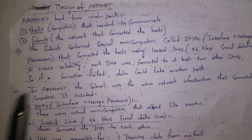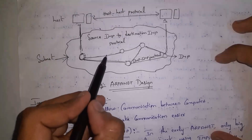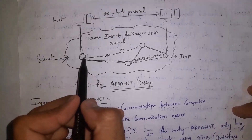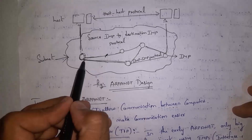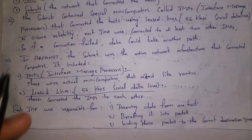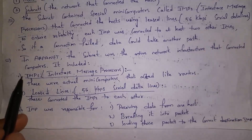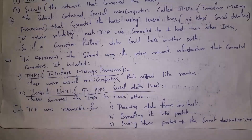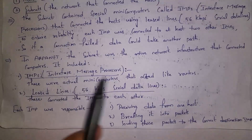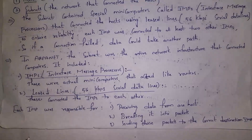Each IMP device is also connected to various other IMP devices, so even if there is any connection failure, data will simply take another path. For example, when I send 'hello,' data is transferred from one device and if there is a cable break along one path, data will simply take another path and successfully reach the destination. In ARPANET, the subnet network contains two components: IMP devices, which are Interface Message Processors acting like routers, and leased lines, which are cable connections connecting IMP devices to each other.